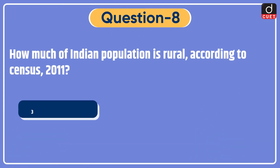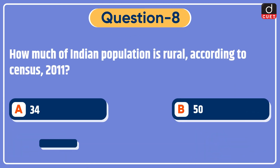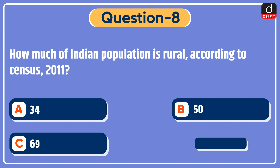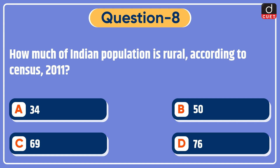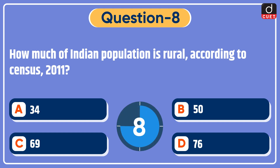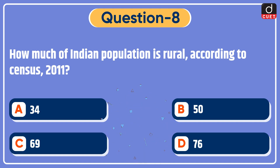Next question: how much of the Indian population is rural? According to Census 2011, options: 34%, 50%, 69%, or 76%? The correct answer is option C — 69%.